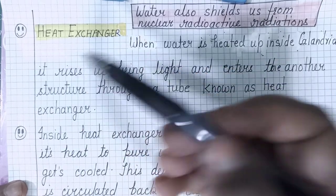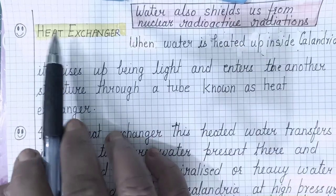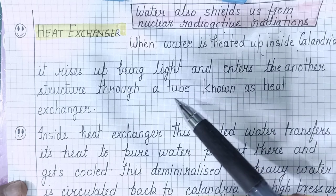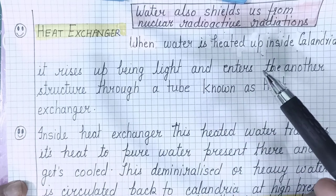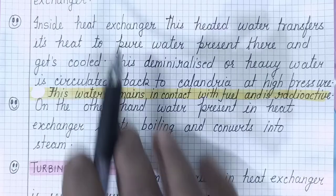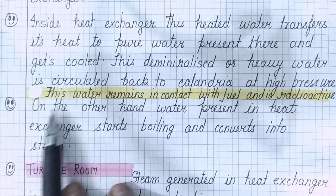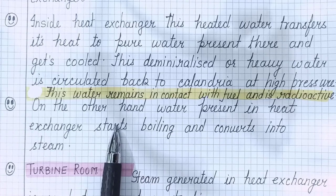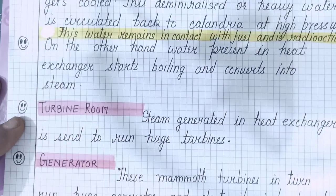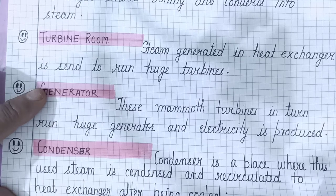The hot water from the nuclear reactor core calandria moves to the heat exchanger. In the heat exchanger, it comes in contact with cool water, gives its heat to that cool water, and is then pumped back into the calandria at high pressure. The cool water in the heat exchanger, having absorbed heat from the coolant, starts converting into steam and moves to the turbine room, where it rotates the turbine and runs the generator to produce electric energy.